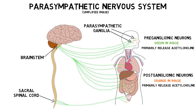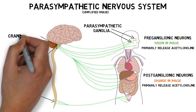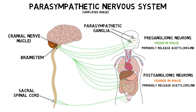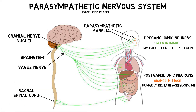The preganglionic neurons that originate in the brainstem arise from the cranial nerve nuclei for the oculomotor, facial, glossopharyngeal, and vagus nerves. These preganglionic neurons travel with the cranial nerves to provide parasympathetic innervation to the head and neck, but the fibers that travel with the vagus nerve also supply the internal organs of the thorax and abdomen.